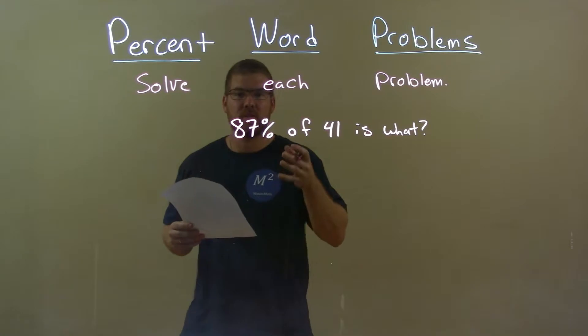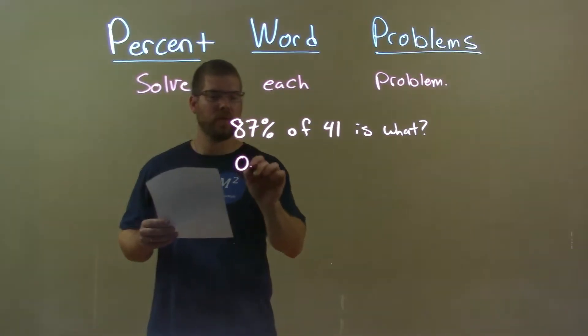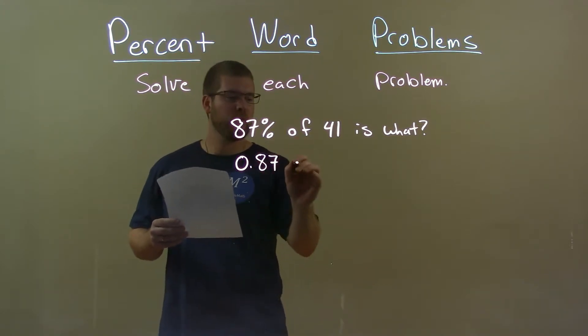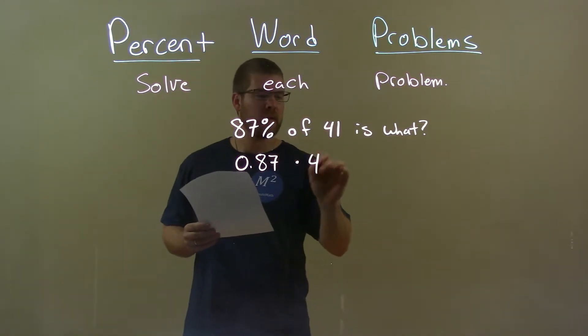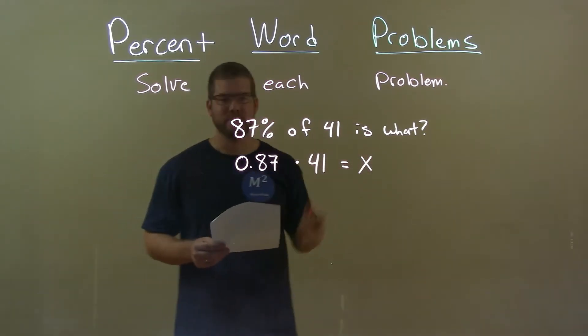Let's write this as an equation, convert this. 87% as a decimal is 0.87, of means multiplication, 41, equals what? The variable x - let's just use x here.